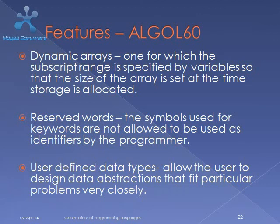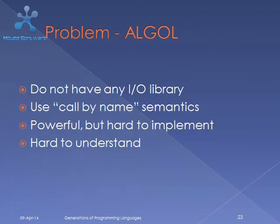Features of ALGOL 60: dynamic arrays, for which the subscript range is specified by variables so that the size of the array is set at the time storage is allocated; reserved words, where symbols used for keywords are not allowed to be used as identifiers; user-defined data types, which allow the user to design data abstractions that fit particular problems. Problems in ALGOL: does not have any input-output library; uses call-by-name semantics; powerful but hard to implement.